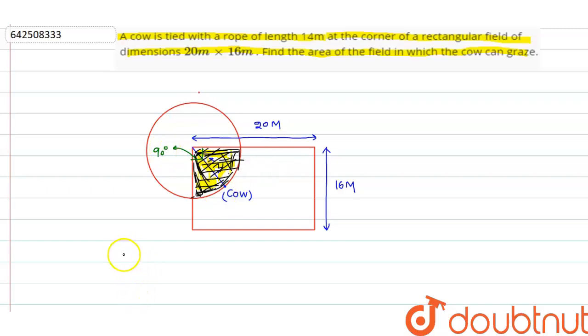the area that the cow can graze is equal to 90 degrees divided by 360 degrees times the area of the circle. The area of the circle is π r², where π equals 22/7 and r² equals 14 × 14.